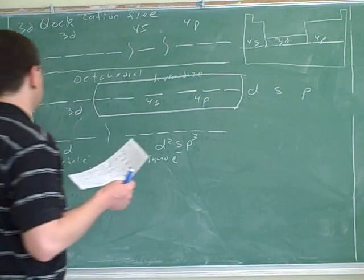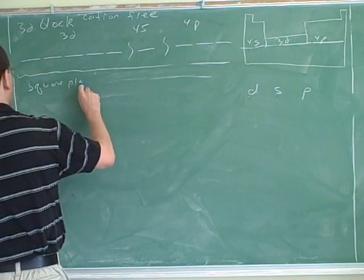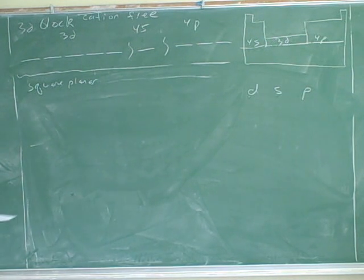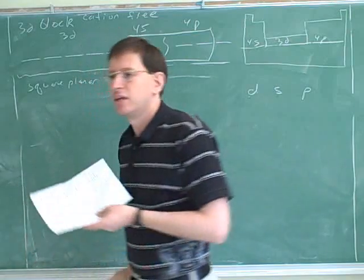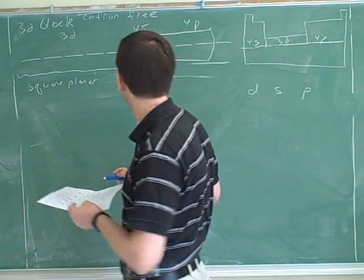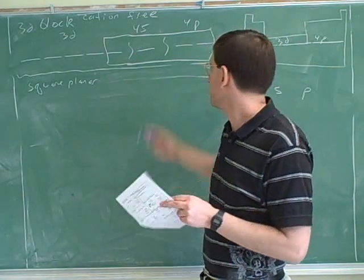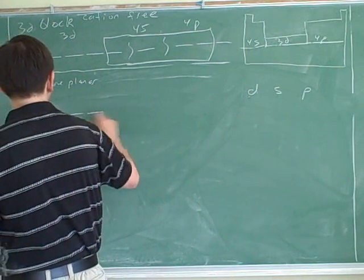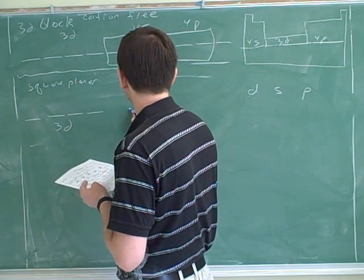Now let's consider the square planar geometry. How many hybrid orbitals are we going to need for square planar? Four — one for each corner of the square. It turns out we only use two of the p orbitals and the s orbital, so we'll need one d orbital to get four overall. We want to blend together four orbitals overall: two p's, one s, and one d. That gives us four hybrid orbitals out.